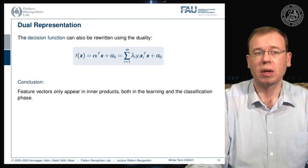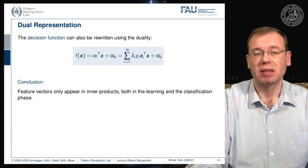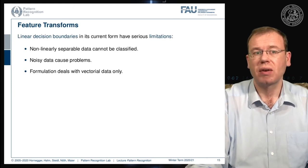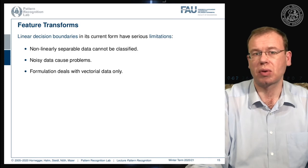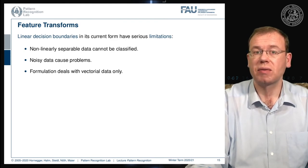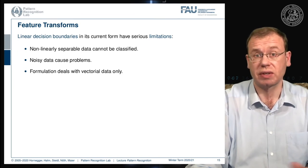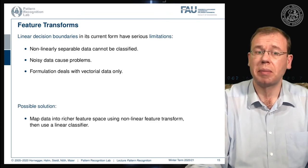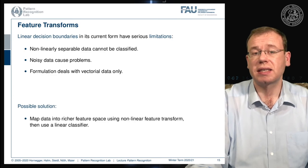Our feature vectors only appear as inner products in both learning and classification. We intrinsically work with very high-dimensional spaces, which brings us to feature transforms. Currently we can only describe linear decision boundaries, which is a serious limitation for non-linearly separable data — slack variables can help find a solution but it remains linear and may not be good. Noisy data also causes problems. The idea is to map data into a higher-dimensional space using a non-linear feature transform, then use a linear classifier.